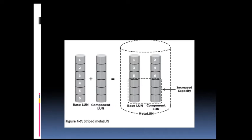As shown in the figure, we have a base LUN and a component LUN forming a MetaLUN, where data is striped over both LUNs — elements 1, 3, 5 on the base LUN and 2, 4, 6 on the component LUN. The increased capacity is collected from each of the LUNs. All LUNs in both concatenated and striped expansion should reside on the same disk drive type, either Fibre Channel or ATA. This concludes traditional storage provisioning.